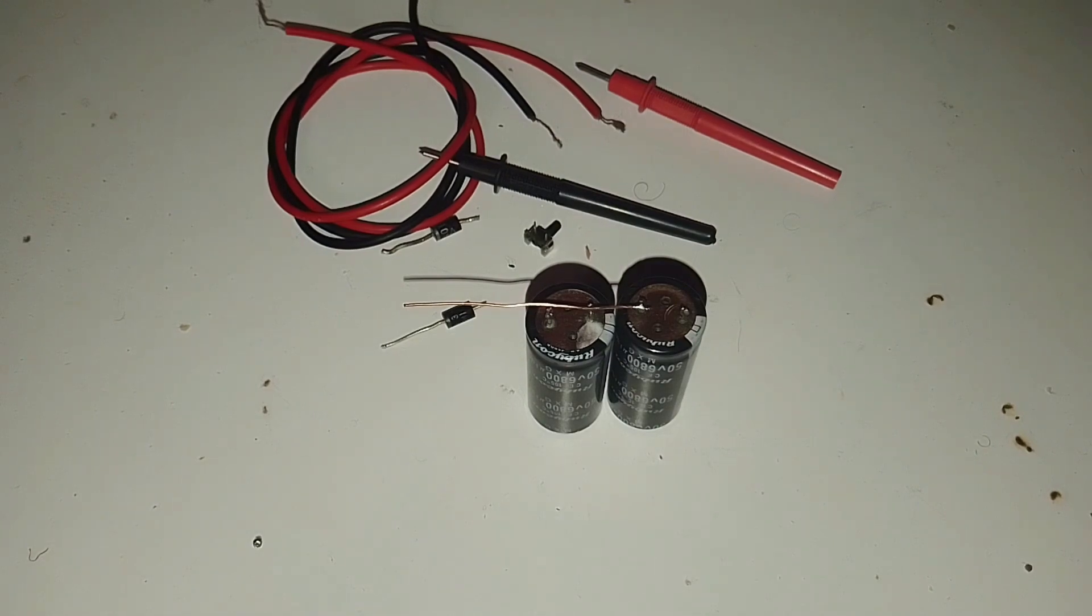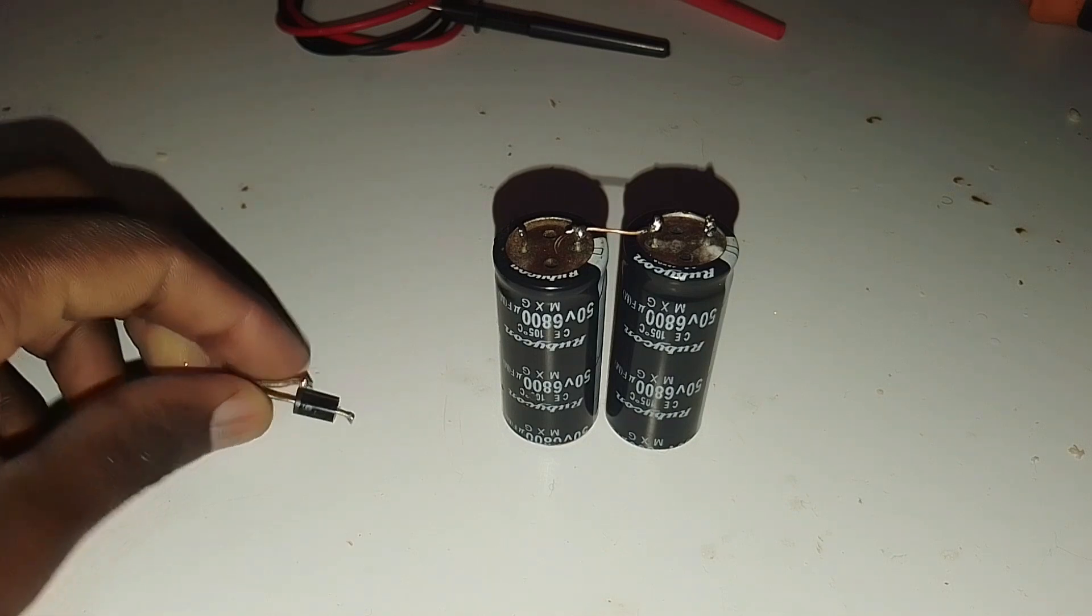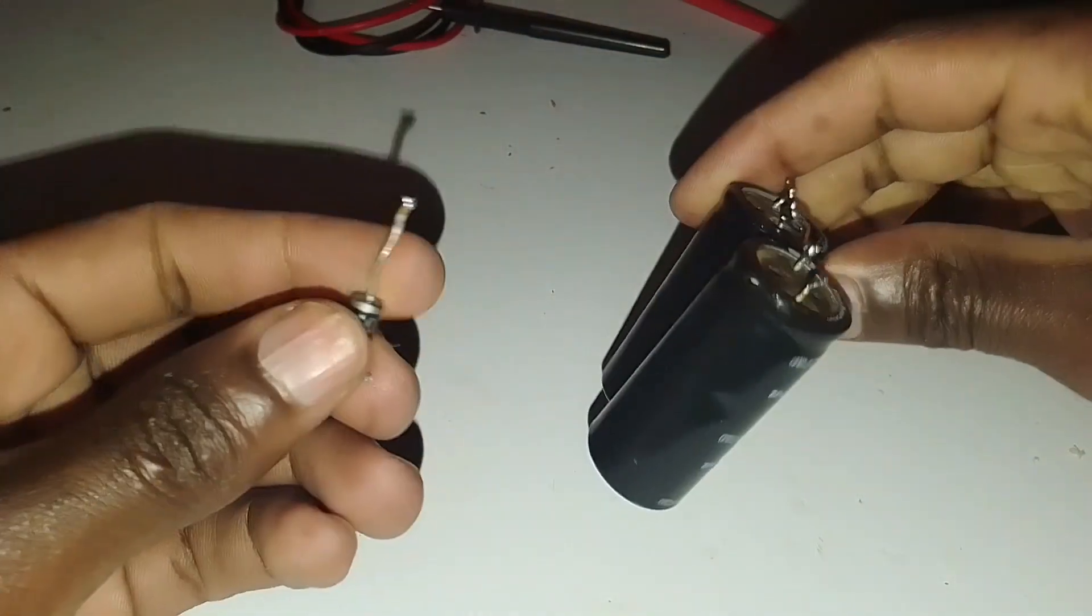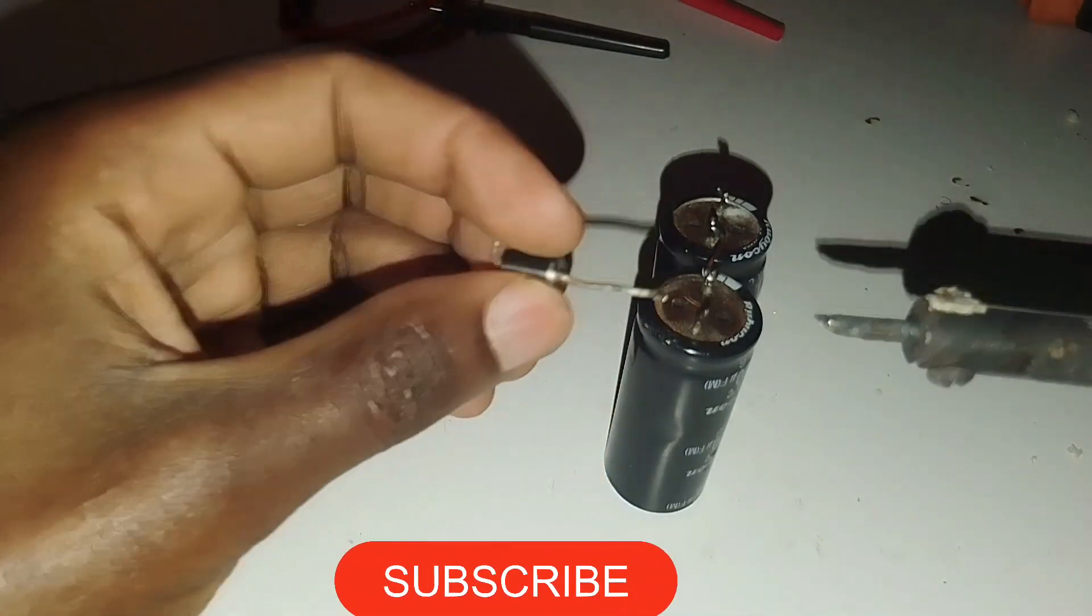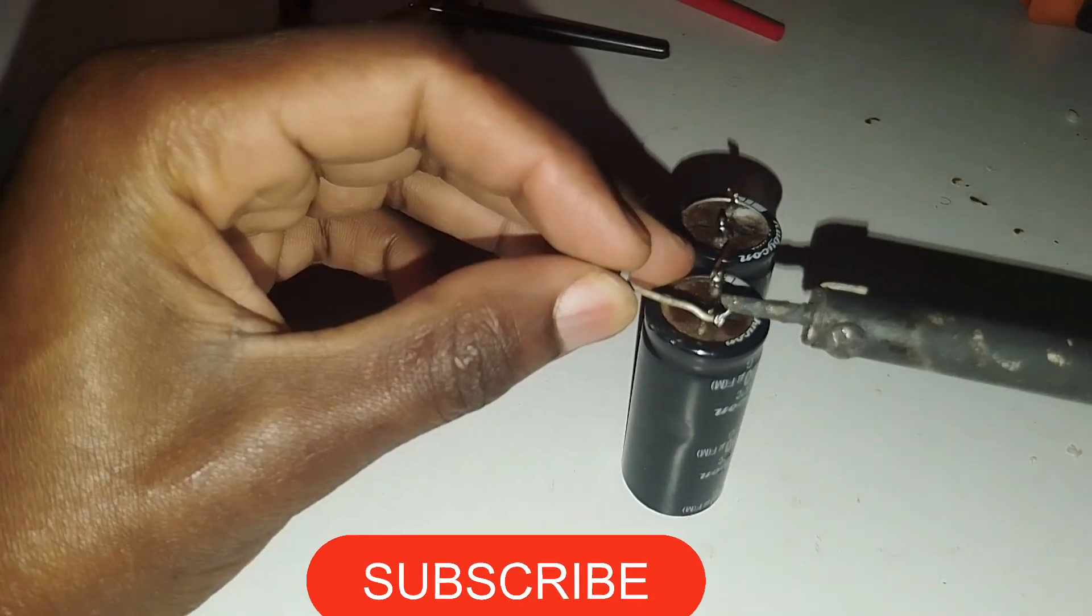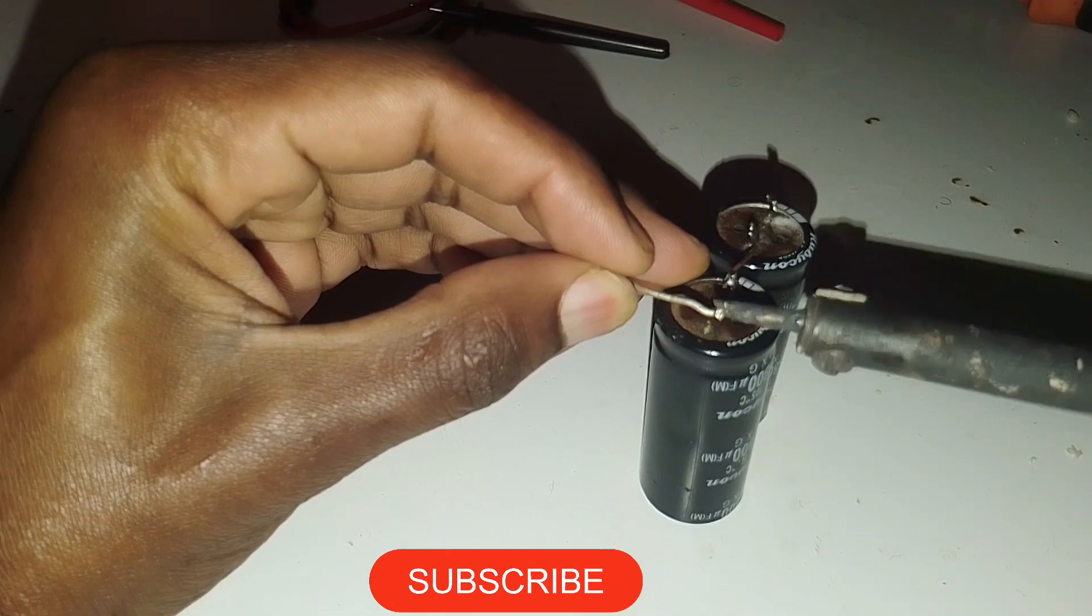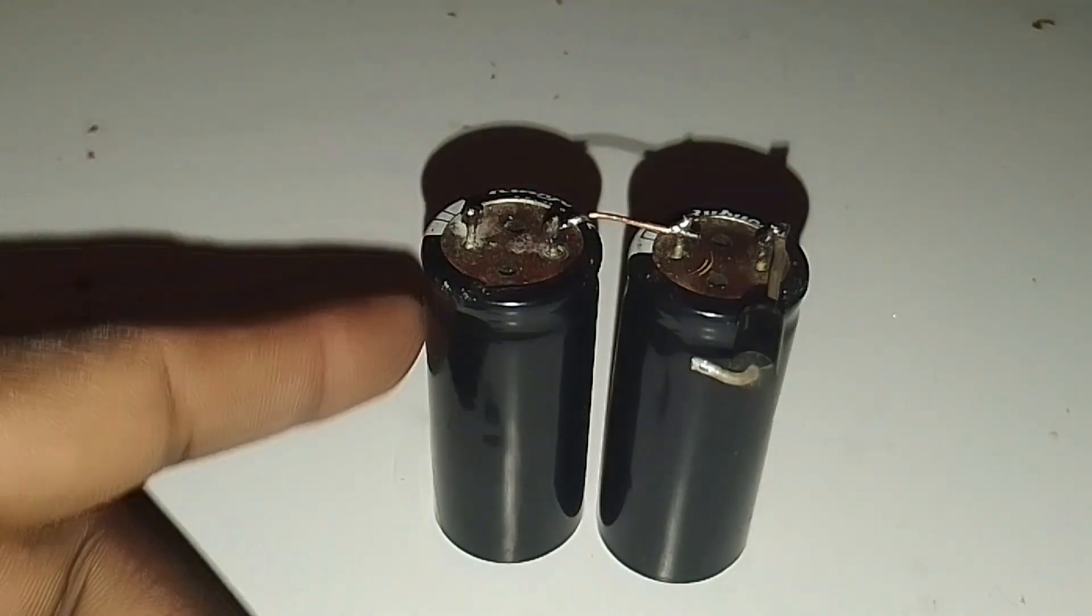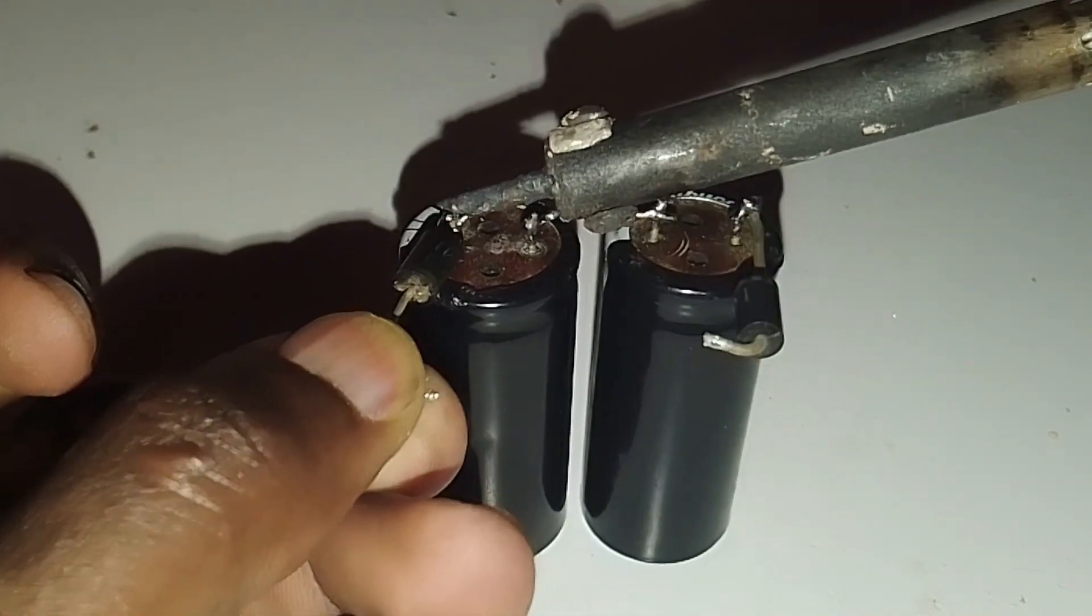The next step is connecting our diodes. Take one diode and connect the anode of the diode to the positive leg of the capacitor. This is the positive side and this is the anode of the diode. The negative side of the other capacitor will connect the cathode of the second diode as shown here.